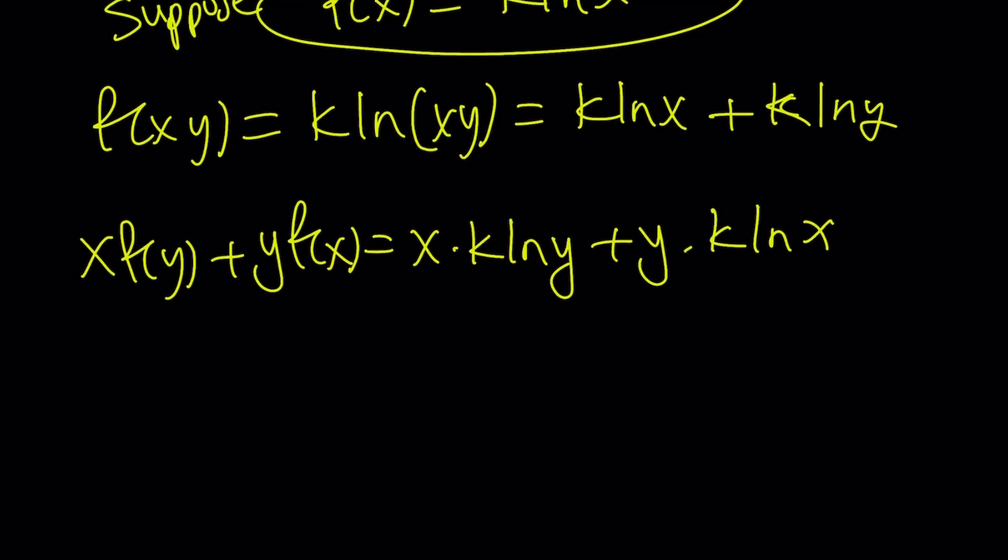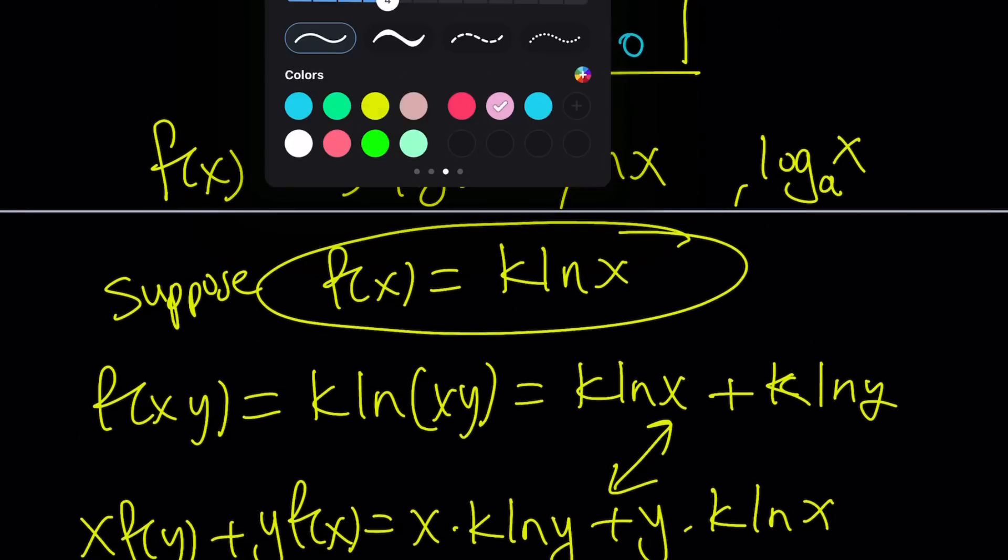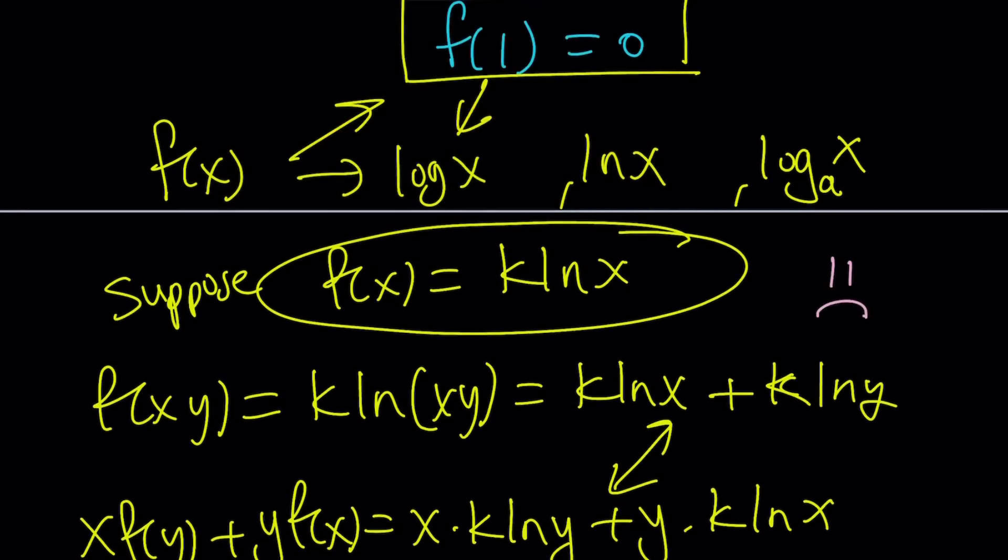x times k ln y plus y times k ln x. And they're not equal, as you can see, right? I mean, x ln y, k ln y, k ln x, no way. These two are not going to be equal. For particular values of x and y, yes, maybe, but not in general. So, this means our function did not satisfy the equation. Uh-oh, that's not good. I'm sad.